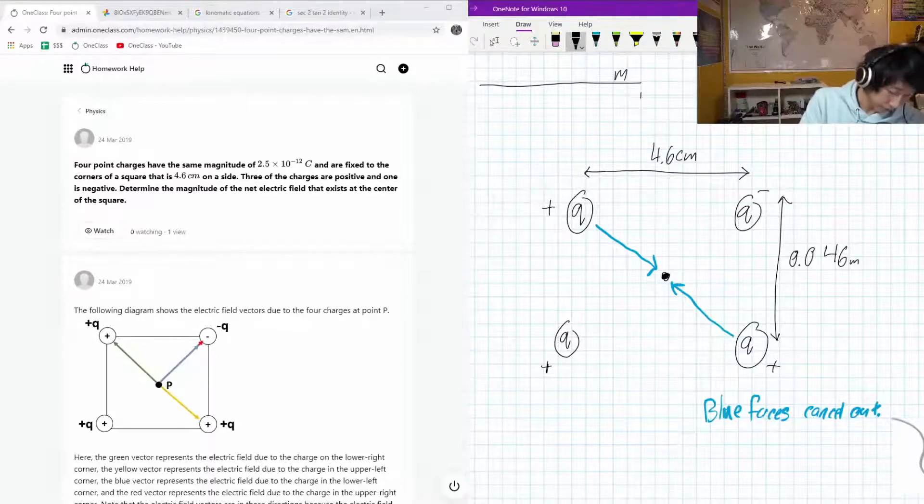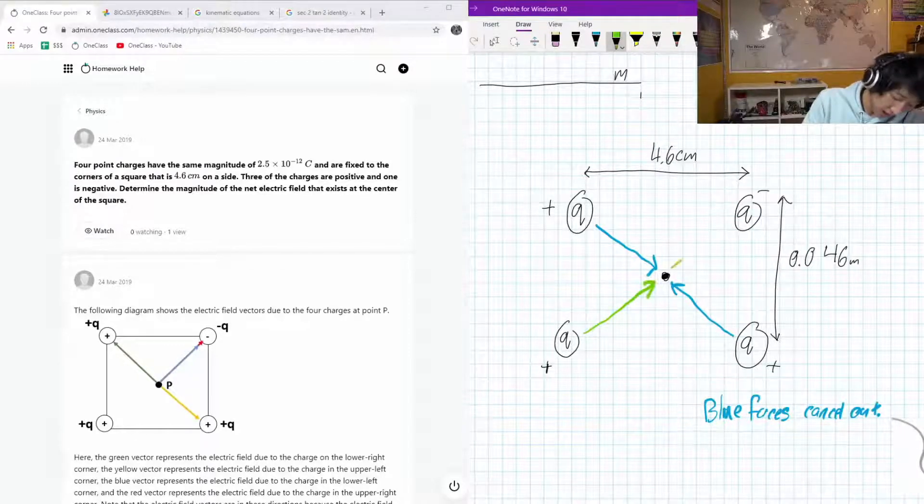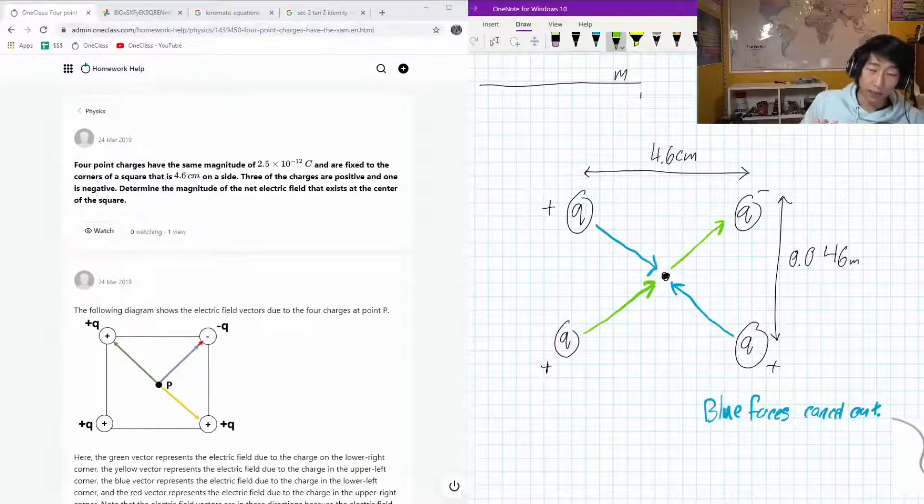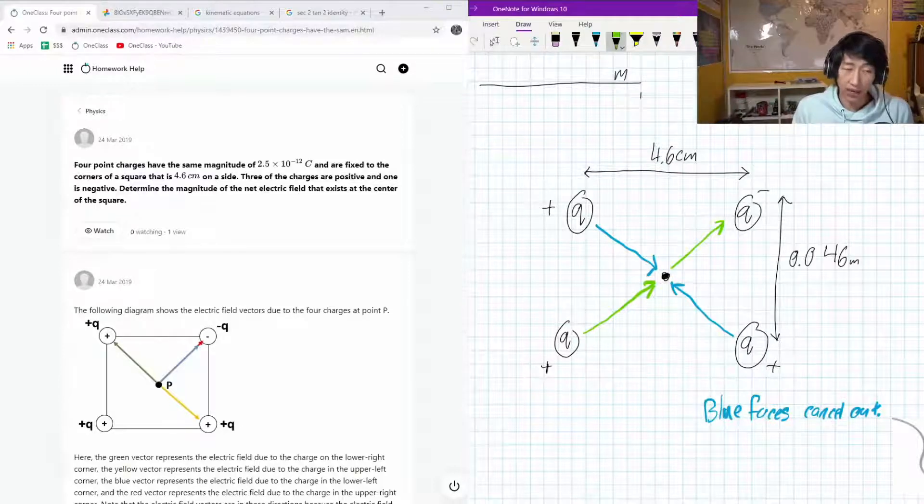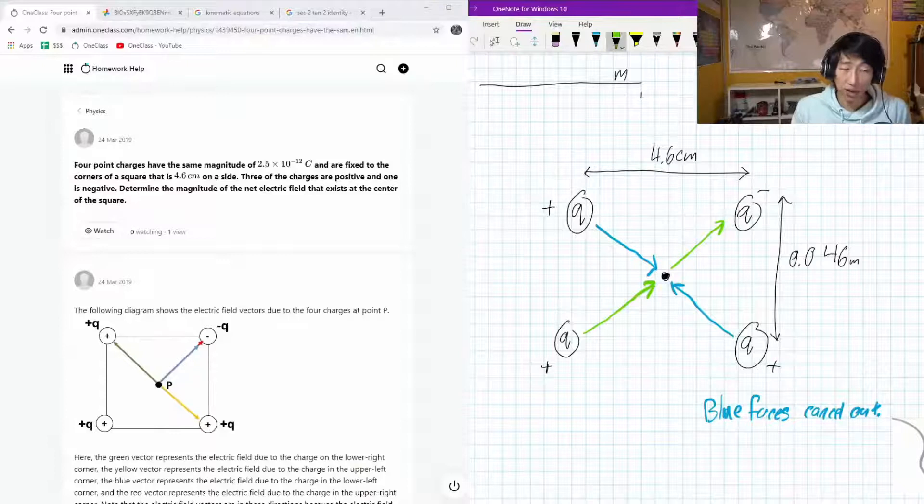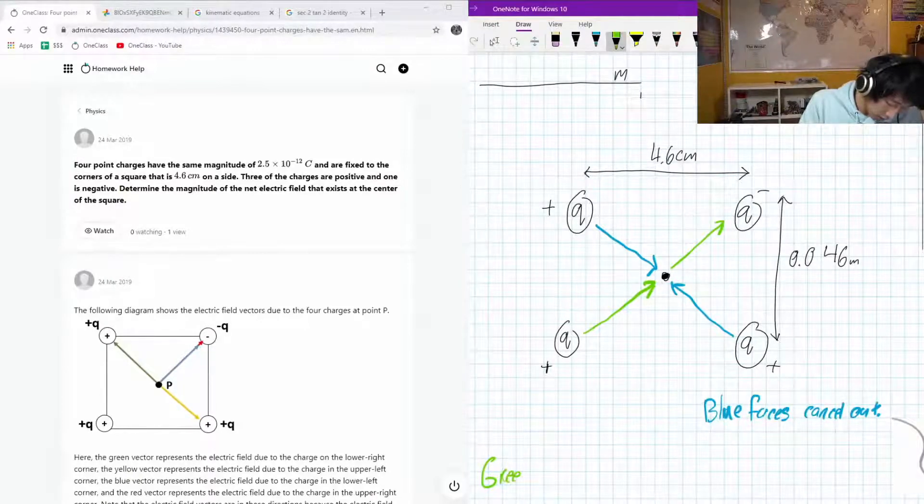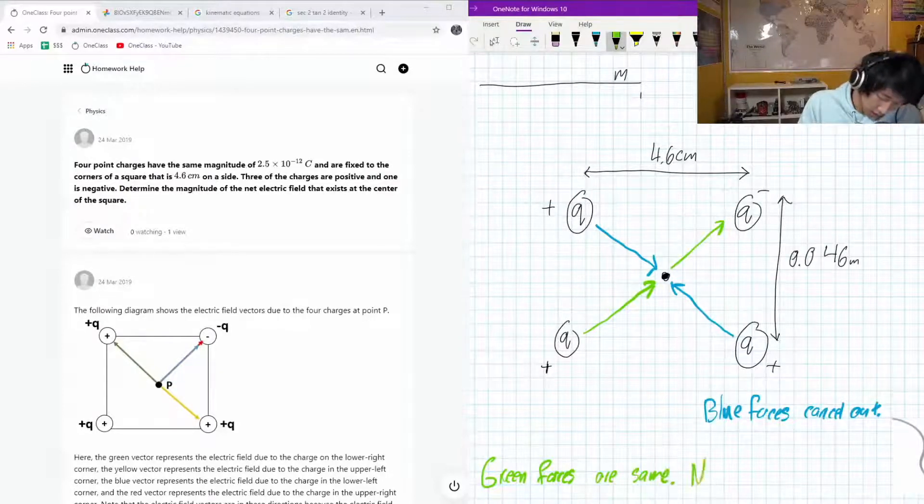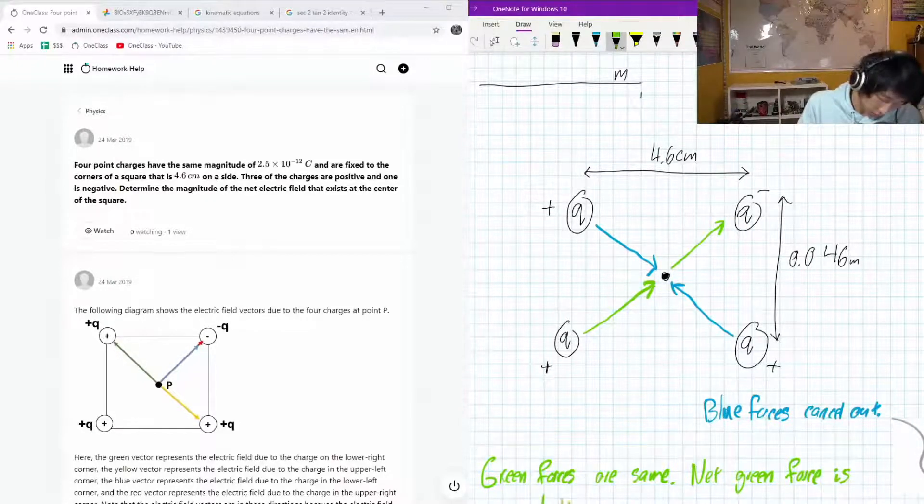But if we have the green forces here, we can see that this would be going that way and this is also going that way, right? So the positive - the convention is the direction of the force is what direction a hypothetical positive charge will be pushed. Beside a positive Q it's going to get away, beside a negative Q it's going to get closer. But since the magnitudes of the charge are going to be the same, we know that the net green force is double one green force.